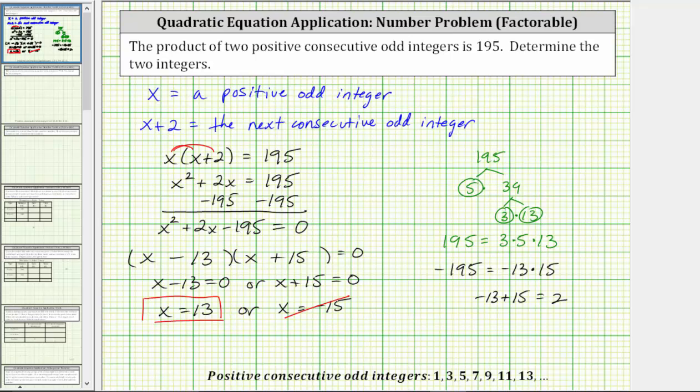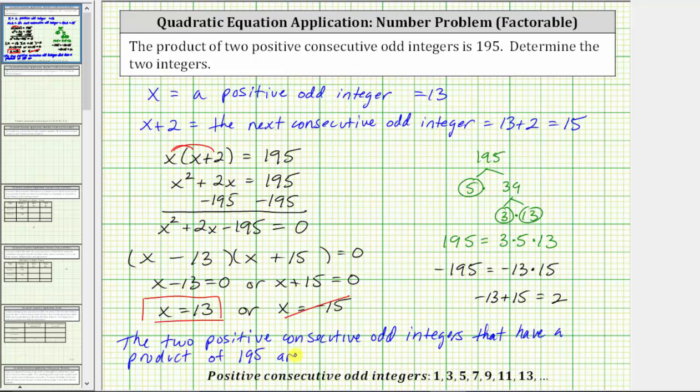Going back up to the top, we now know the first positive odd integer is equal to 13. And if x is equal to 13, x plus two is equal to 13 plus two, which equals 15. We now know the two positive consecutive odd integers that have a product of 195 are 13 and 15. I hope you found this helpful.